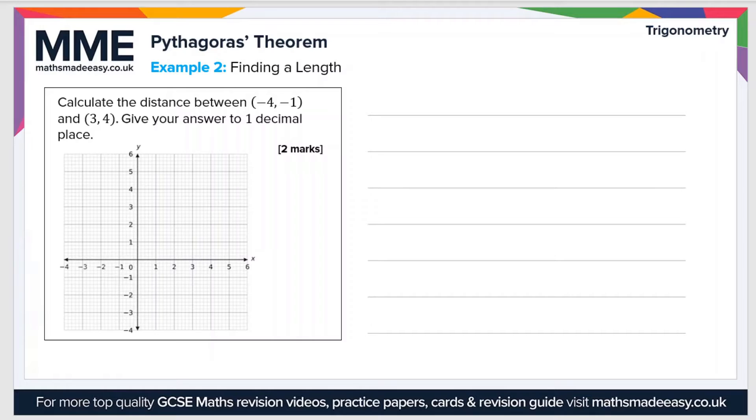Let's just mark on those points first of all. So negative 4, negative 1 is there, and 3, 4 is there. You might be wondering, why is this a Pythagoras question? Well, we can draw a right-angled triangle by drawing a straight line between the two points.